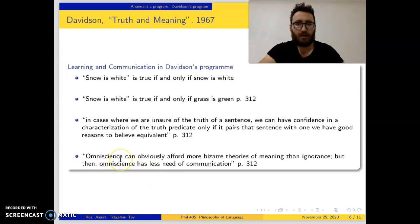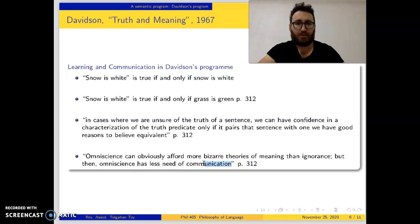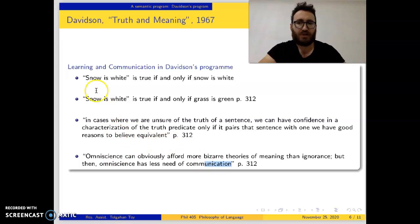He also says: 'Omniscience can obviously afford more bizarre theories of meaning than ignorance, but then omniscience has less need of communication.' So communication, ignorance, and our beliefs are all important in understanding or in generating these meaning-specifying theorems.